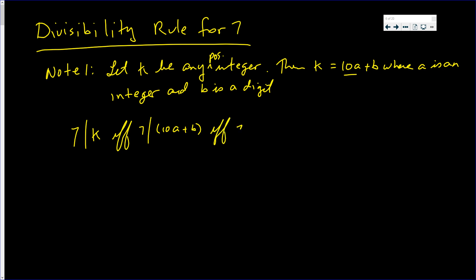If and only if 7 divides 10a plus b minus 21b, because we know 7 divides that number. So 7 is going to divide what's in the brackets if and only if 7 divides that.